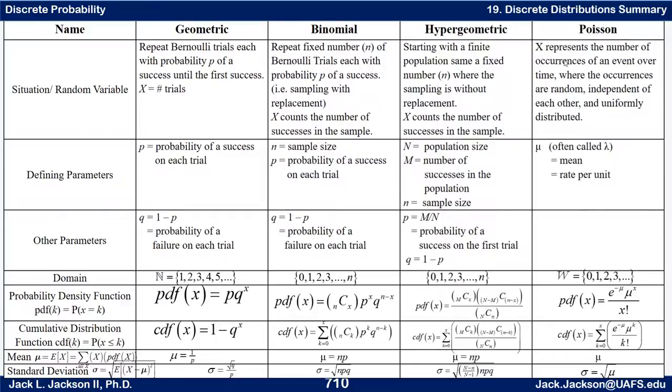Now we have formulas for the PDFs in all of these cases. Let me go back and talk about the Poisson just a minute. X in the Poisson represents the number of occurrences of an event over time where the occurrences are random, independent of each other and uniformly distributed. The defining parameter is most people call it lambda, but it is the mean. So I'm going to call it mu. It is the mean, the rate per unit. Most often called lambda, I'll call it mu.